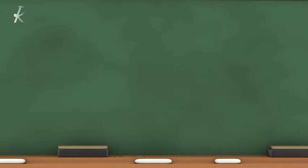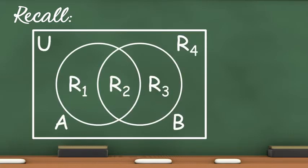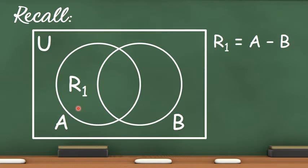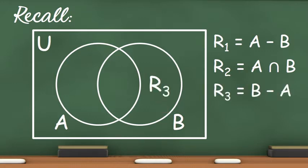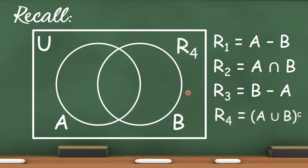Let us first recall the four regions in a Venn diagram. These regions represent the four subsets of the universal set formed when two sets intersect. R1 is the set of elements in A that are not in B. R2 is the set of elements that are both in A and B. R3 is the set of elements in B that are not in A. Lastly, R4 is the set of elements in the complement set of A union B.